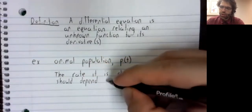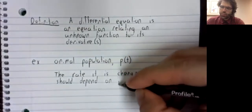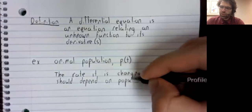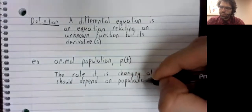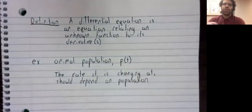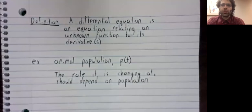The rate it is changing at should depend on the current population. Because think of it, suppose the population is growing. Well, the more animals there are already, the more animals there are to breed and produce offspring. So the more offspring are being produced, and the faster the population is growing.